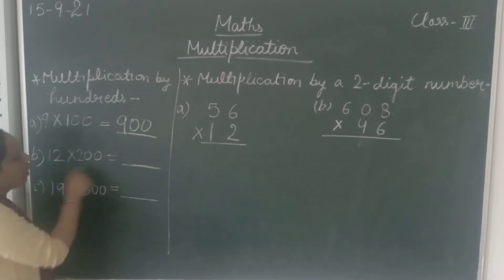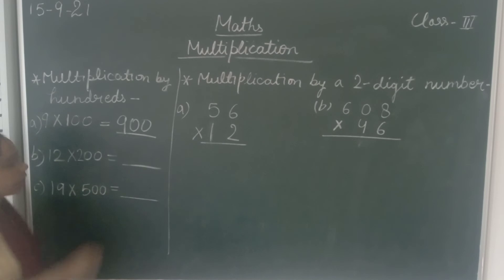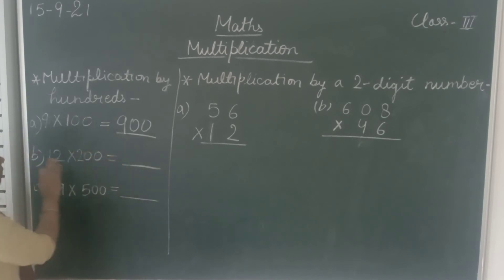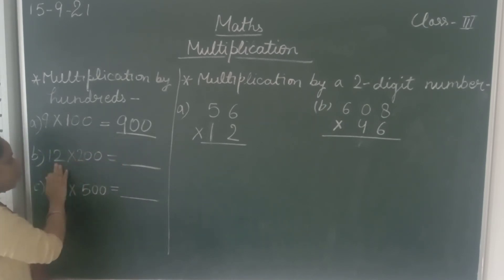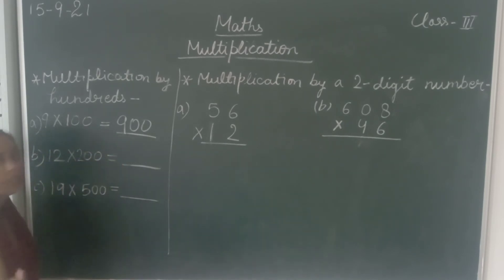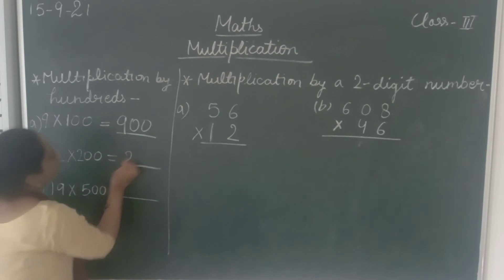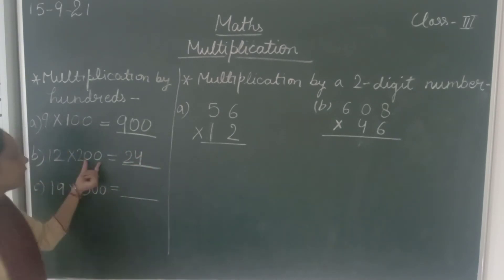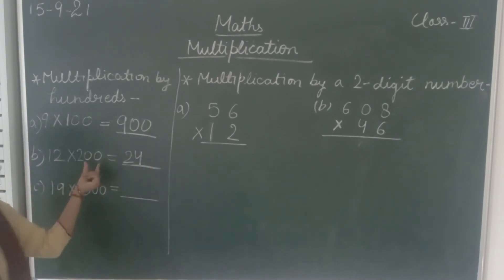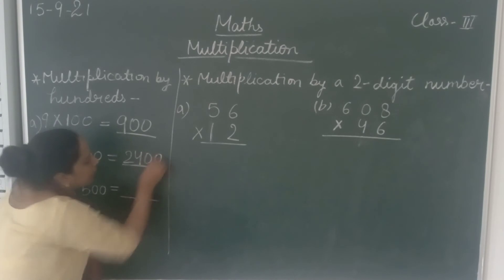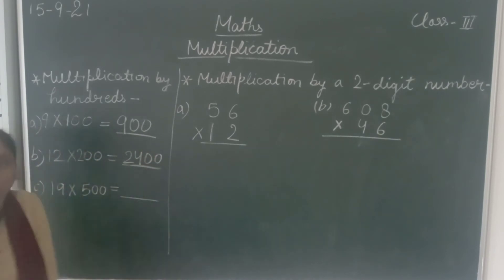Now let's solve 12 × 200. Again, leave the two zeros and just multiply 12 and 2. So 12 twos are 24. And then the remaining two zeros will come in the product, giving us 2400.